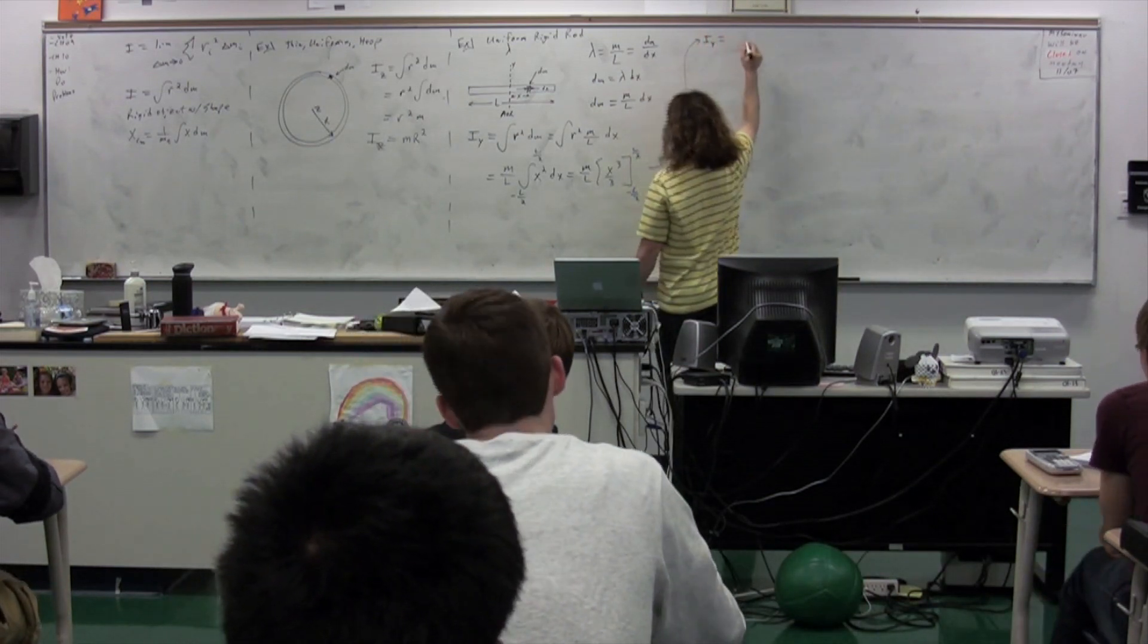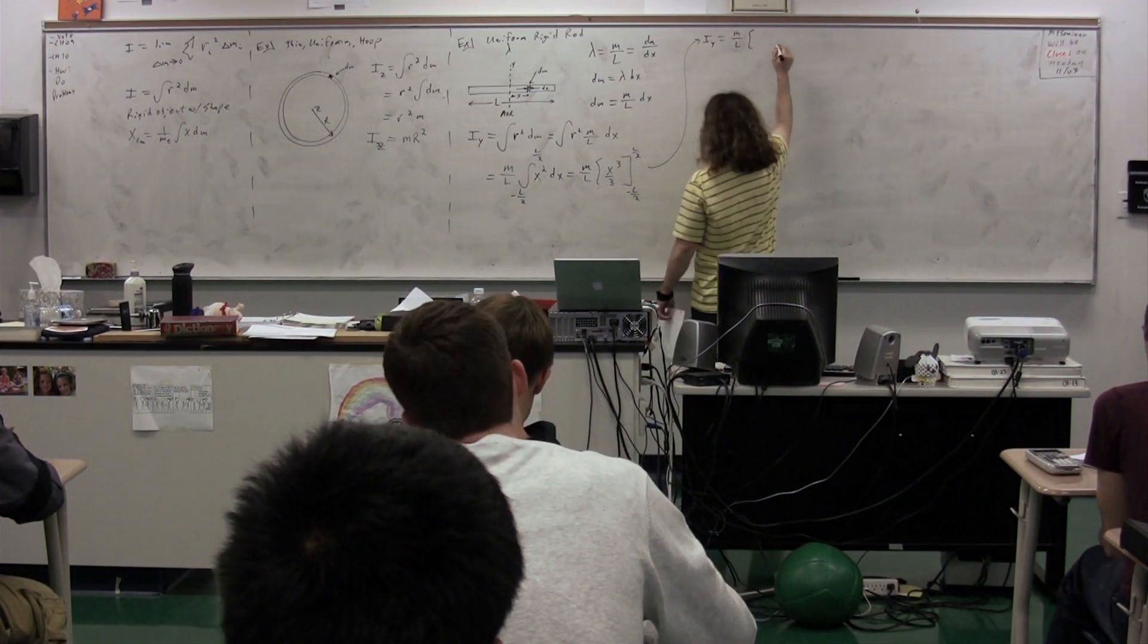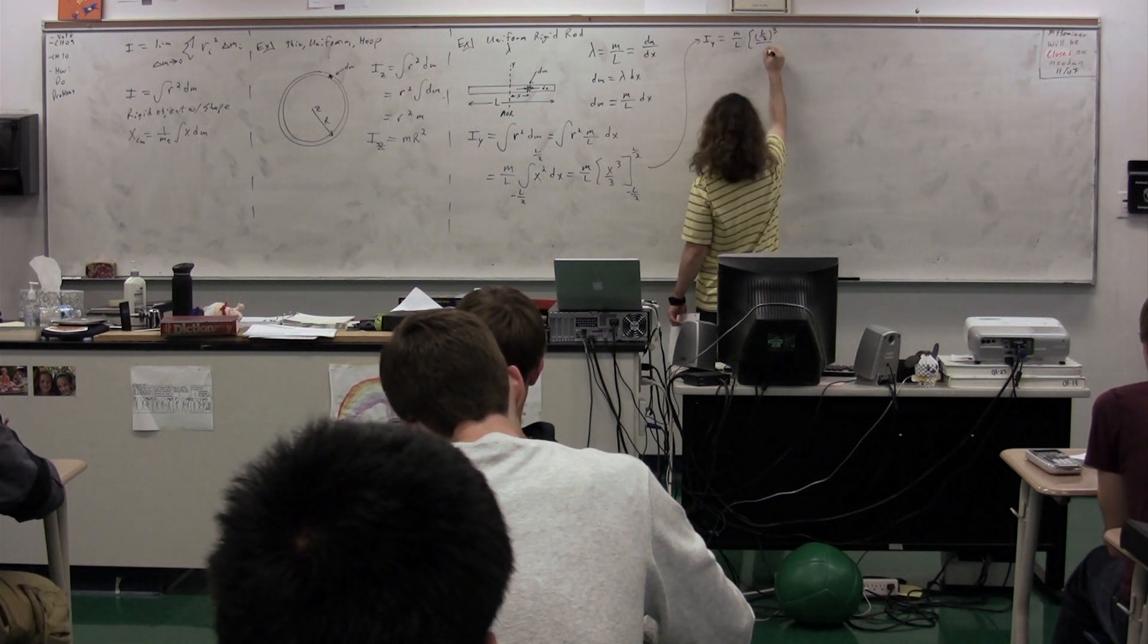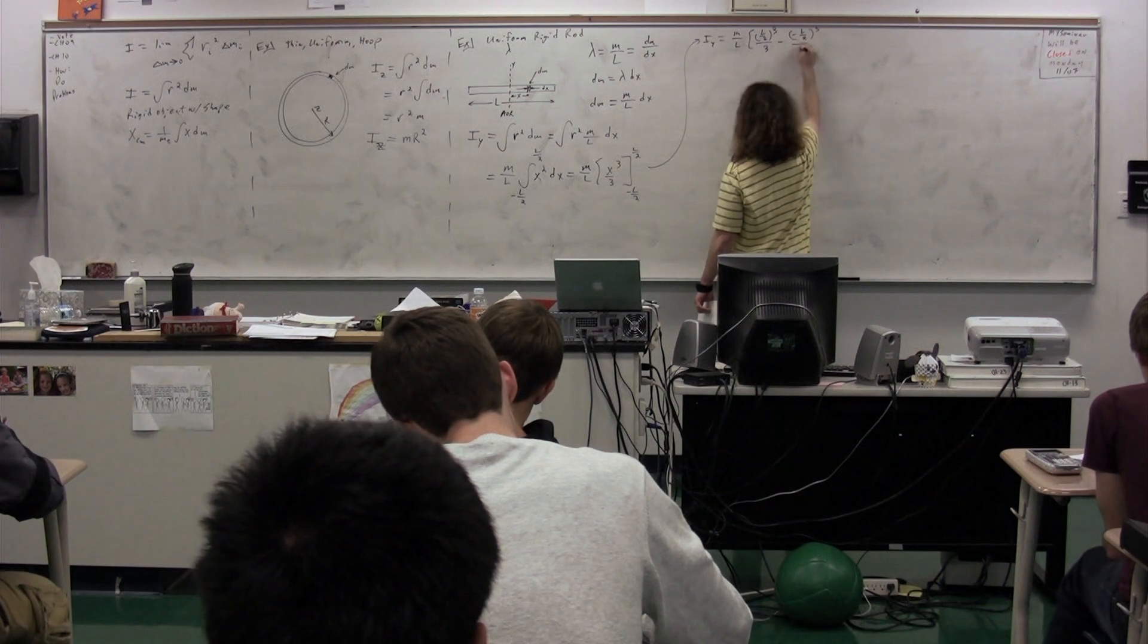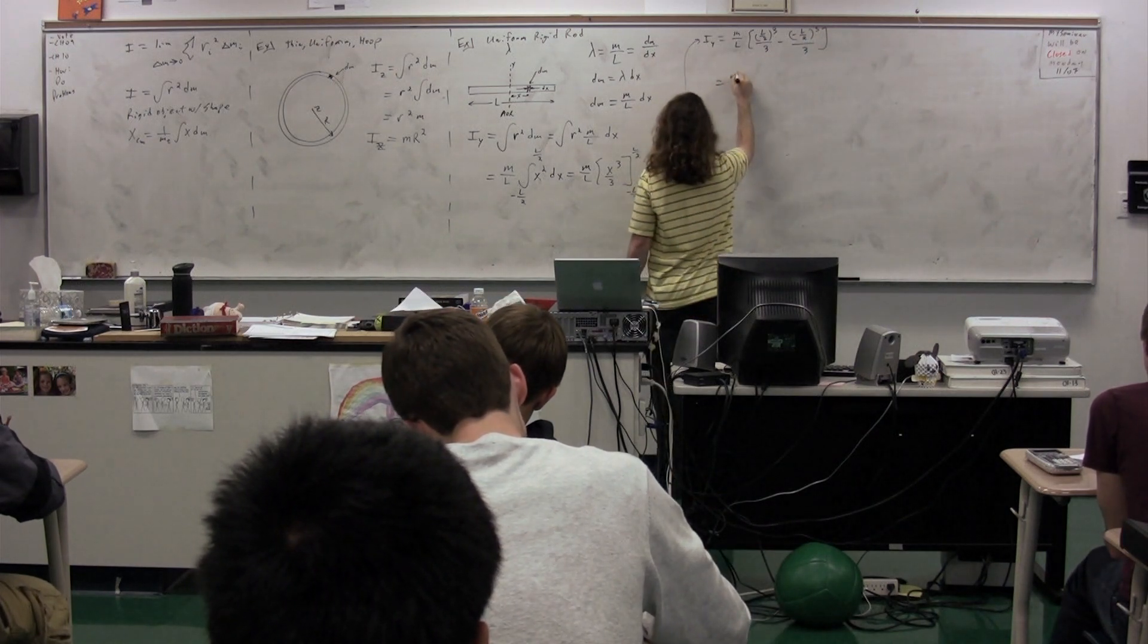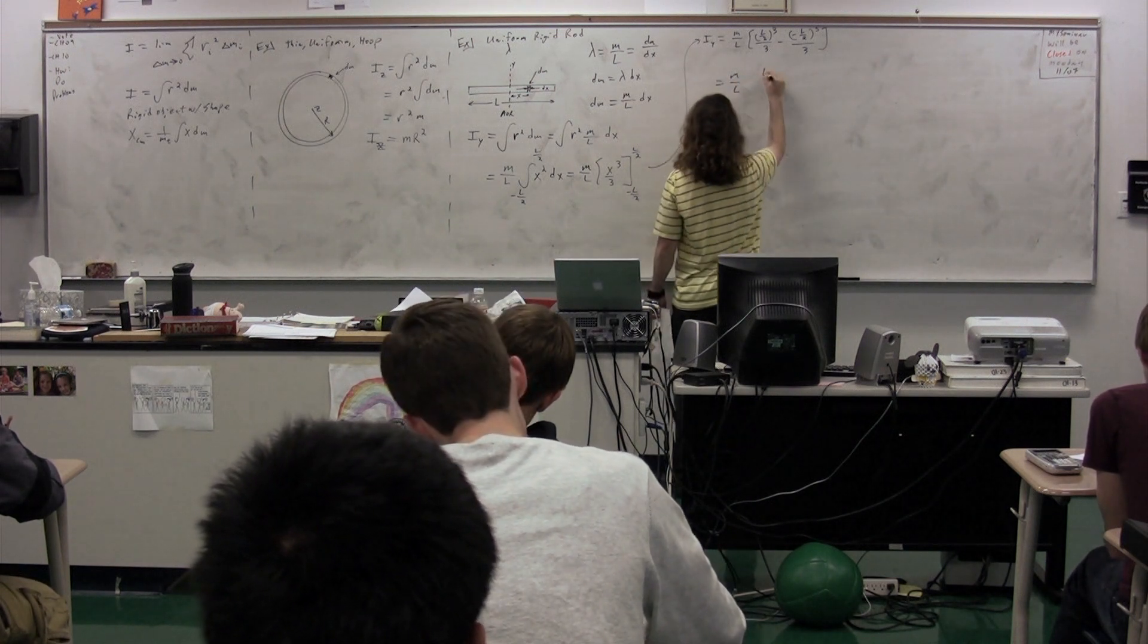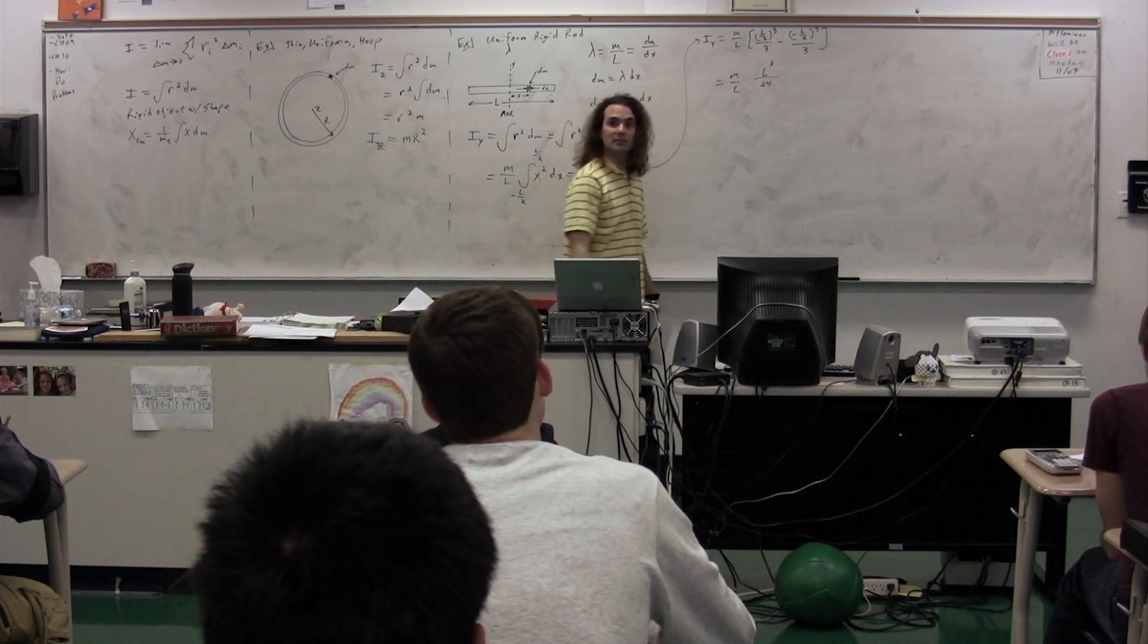Mass per unit length. This is L cubed over 8 times 3. Am I correct? That's 24? Yes. All right. A negative times a negative times a negative times a negative makes a positive. So positive L cubed over 24.